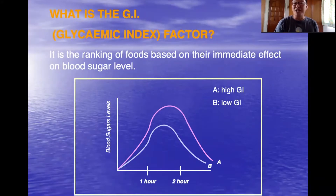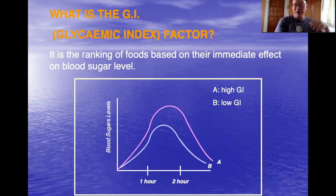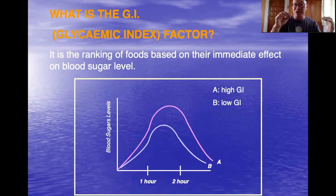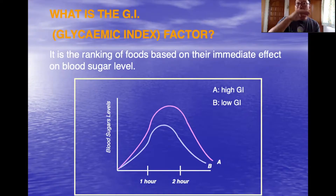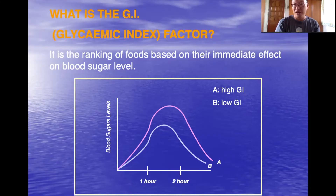First, let me remind you what the glycemic index is. It is a ranking of foods based on the immediate effect on blood sugar level. On the vertical axis is blood sugar level versus time. A high GI fruit will give you a big area under the curve and hence a high GI value; a low GI fruit will have a low area under the curve and hence a low GI value.